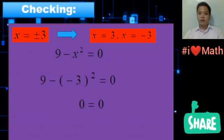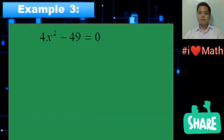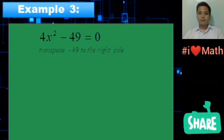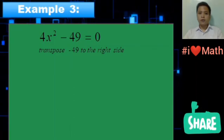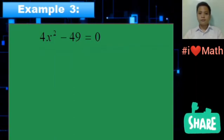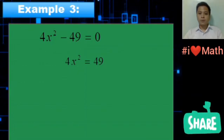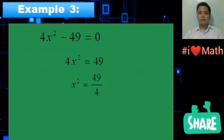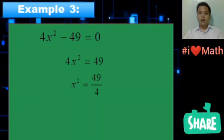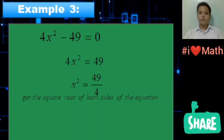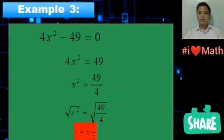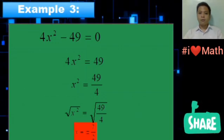Example 3: 4x² - 49 = 0. First, transpose -49 to the right side — we will have 4x² = 49. Divide both sides of the equation by 4 — we will have x² = 49/4. Get the square root of both sides of the equation and the answer is x = ±7/2.